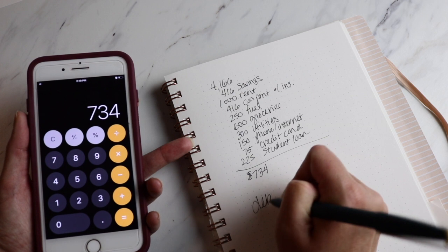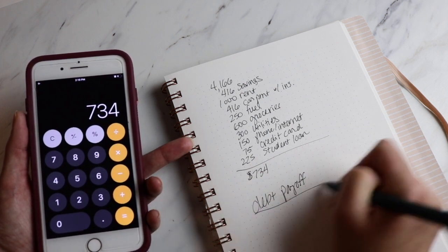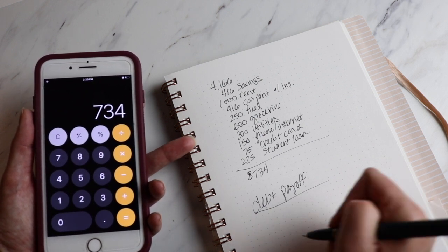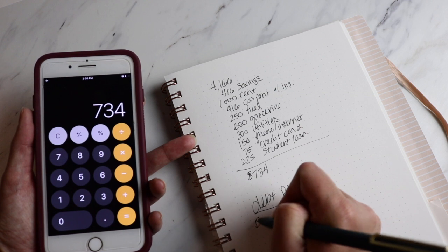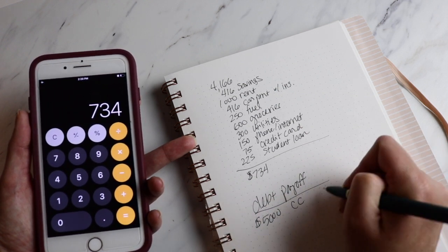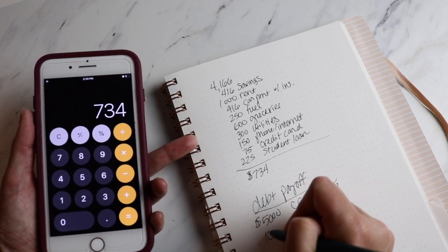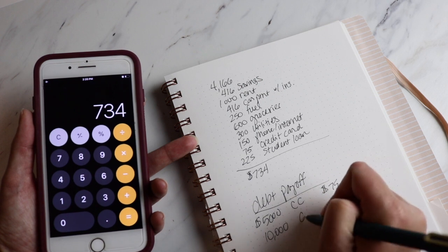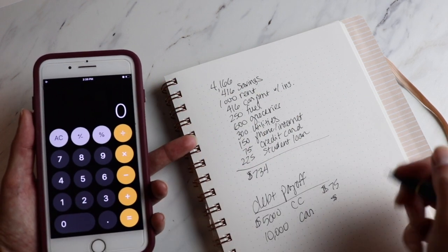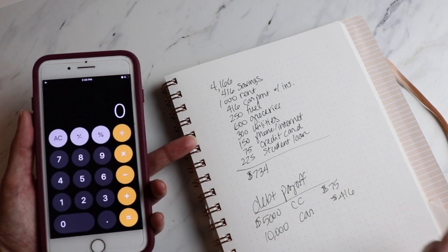If you have $734 left, then you can put together a debt payoff strategy and list your debts smallest to largest, like Dave Ramsey recommends in the debt snowball. Let's say that you owe $5,000 on that credit card and your payment was $75 per month. You owe $10,000 on your car and your payment was $416, but that was including the insurance.